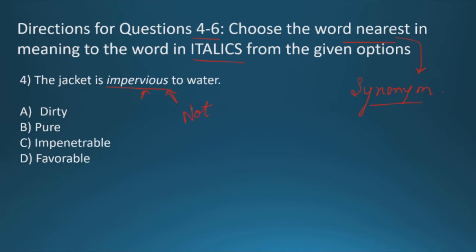The jacket is impervious to water. First of all, impervious means not allowing fluid to pass through. Dirty is something that is not neat and clean, so this is not what we want. Pure is again the opposite of dirty. Impenetrable means not allowing, it is synonym of impervious, that is not allowing fluid to pass through, it is impenetrable. Favorable is a totally different word, so our option C will be the correct answer.